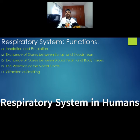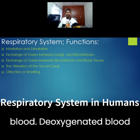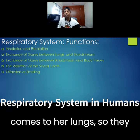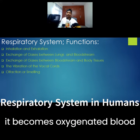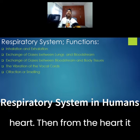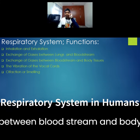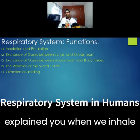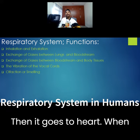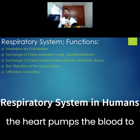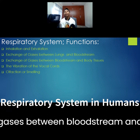When we inhale oxygen, it comes to our lungs. The deoxygenated blood comes to our lungs, gets filled with oxygen, becomes oxygenated blood, and then goes to the heart. From the heart, it goes to all parts of our body. This is also known as the exchange of gases between the bloodstream and body tissues — the different types of tissues in our body.